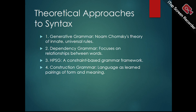Construction grammar (CXG) is a linguistic theory that views language as a collection of learned pairings between forms, structures, and meanings, known as constructions. These constructions range from simple words to complex sentence patterns, each carrying its own specific meaning. Unlike traditional grammars that separate syntax and semantics, CXG treats every construction as inherently meaningful. For example, the pattern 'X gives Y Z,' as in 'she gave him a gift,' conveys the meaning of a transfer between three participants. CXG argues that speakers learn constructions through exposure, building up a mental inventory of form-meaning pairings, emphasizing usage and experience in language acquisition.